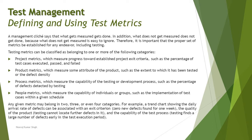We classify metrics into four major categories. First, project metrics measure the progress towards established project exit criteria, such as percentage of test cases executed, passed, or failed — measuring how well you are progressing with the overall project to meet release goals. Second, product metrics measure some attribute of the product specifically, such as the extent to which it has been tested or the defect density.